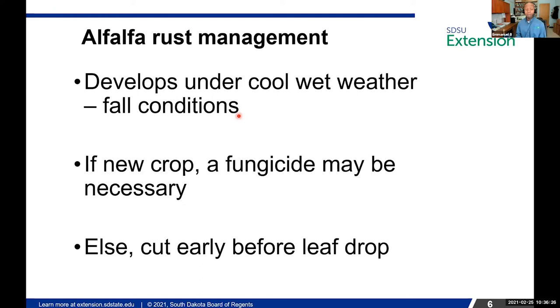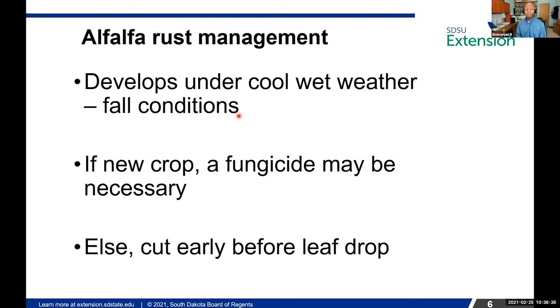Fungicide application is usually not recommended for alfalfa rust — by the time you see it, the disease has already developed, and you'll be cutting soon anyway. Fungicide may help with quality but won't increase tonnage, so the economics often don't pay. An exception is a new alfalfa stand where rust comes early — there a fungicide may be recommended to improve standability. The best management is scouting, and cutting early as soon as you see rust to save on quality before significant leaf drop.